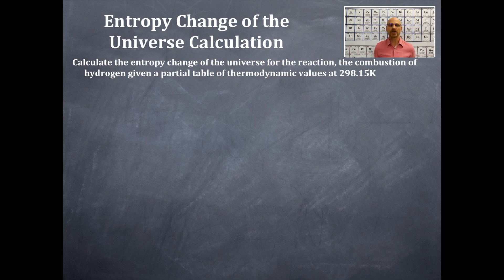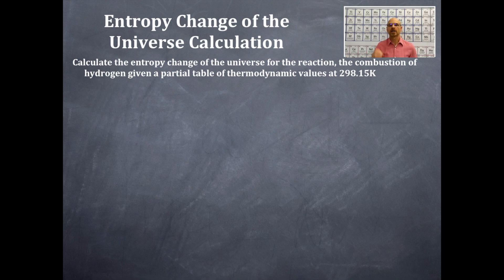We're going to calculate the entropy change of the universe for the reaction — that is the combustion of hydrogen — given a partial data table of thermodynamic values at 298.15 Kelvin, which is 25 degrees Celsius. The first thing you need to do is find out what the combustion of hydrogen reaction is.